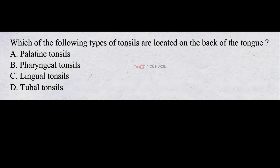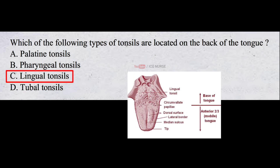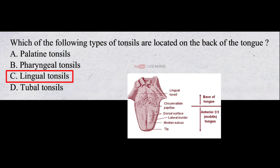Which of the following types of tonsils are located on the back of the tongue? A. Palatine tonsils B. Pharyngeal tonsils C. Lingual tonsils D. Tubal tonsils. The correct answer is C. Lingual tonsils. Lingual tonsils are the type of tonsils that are located on the back of the tongue.